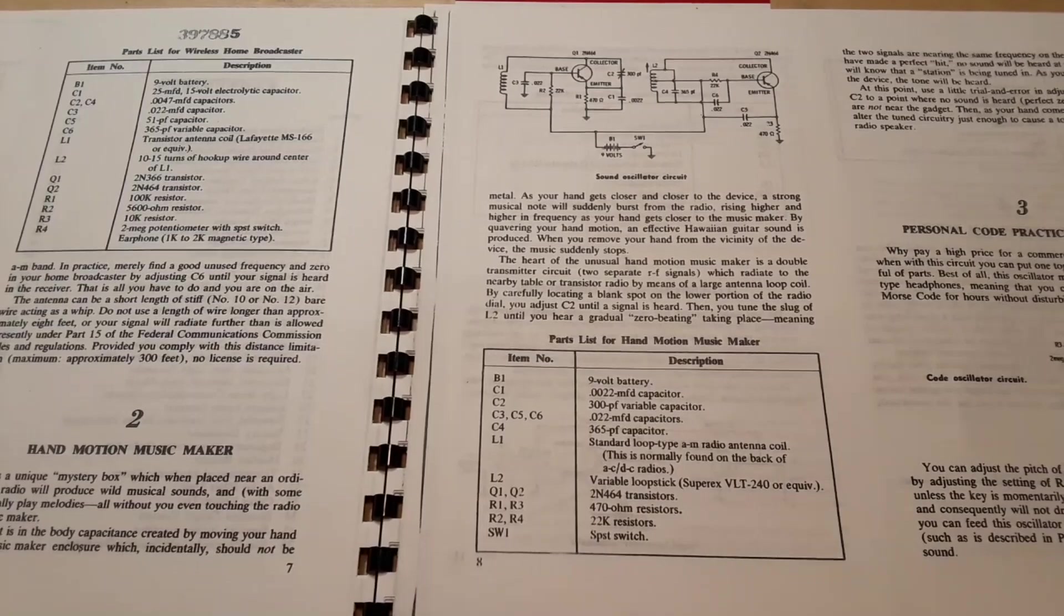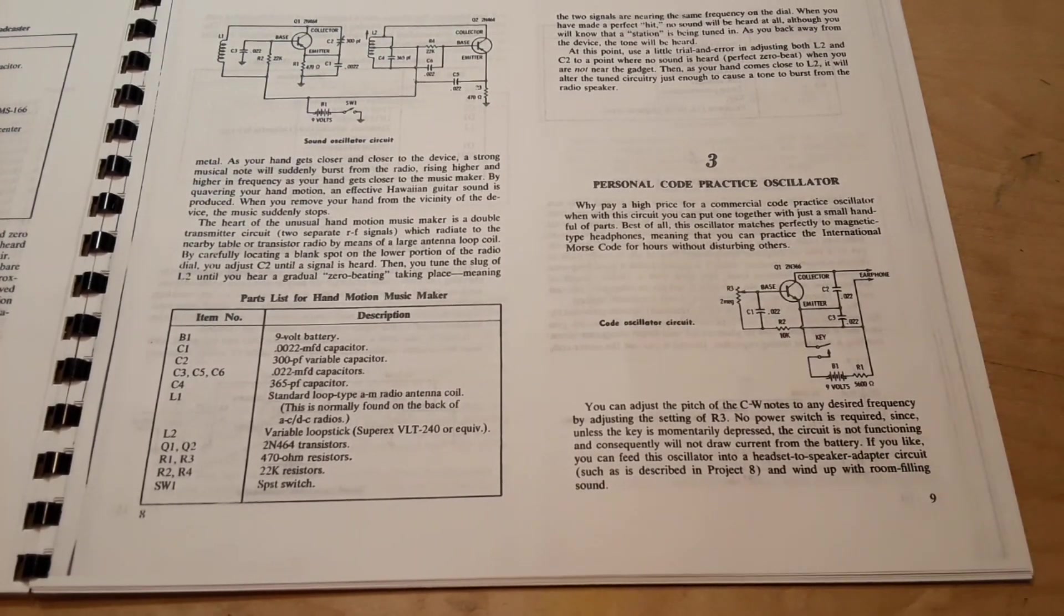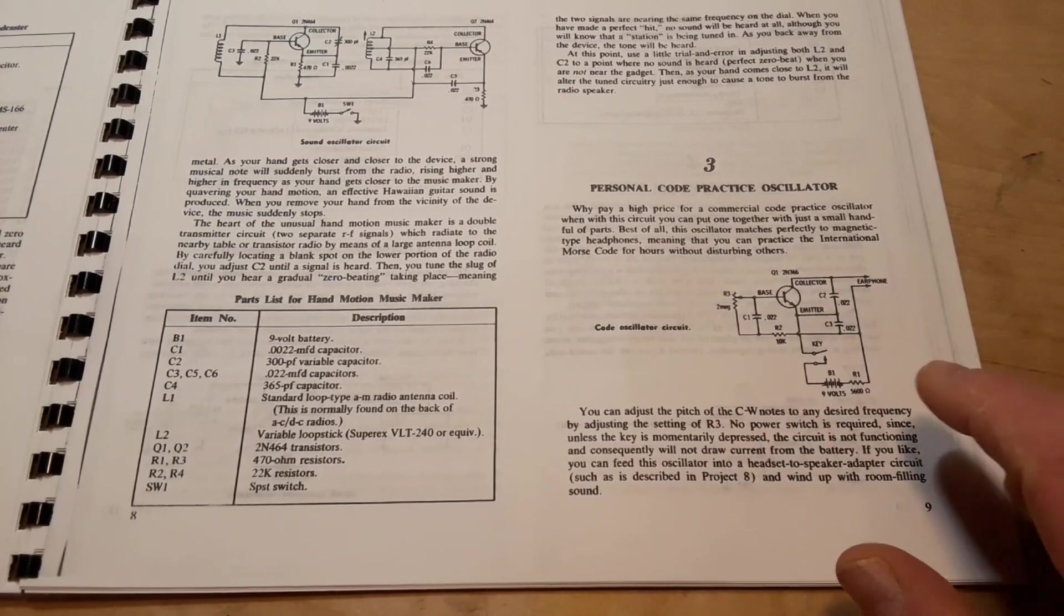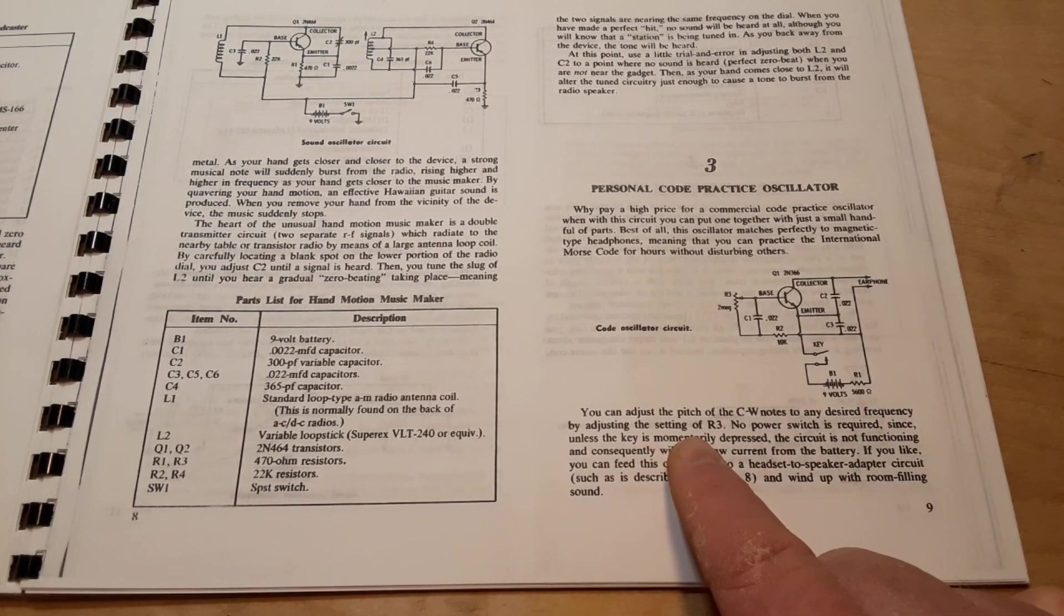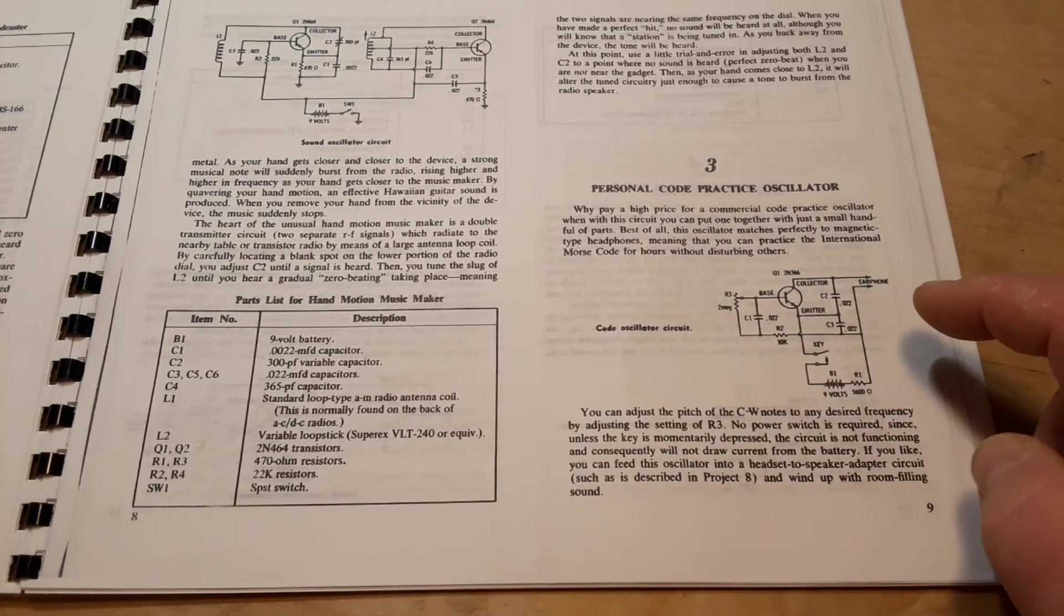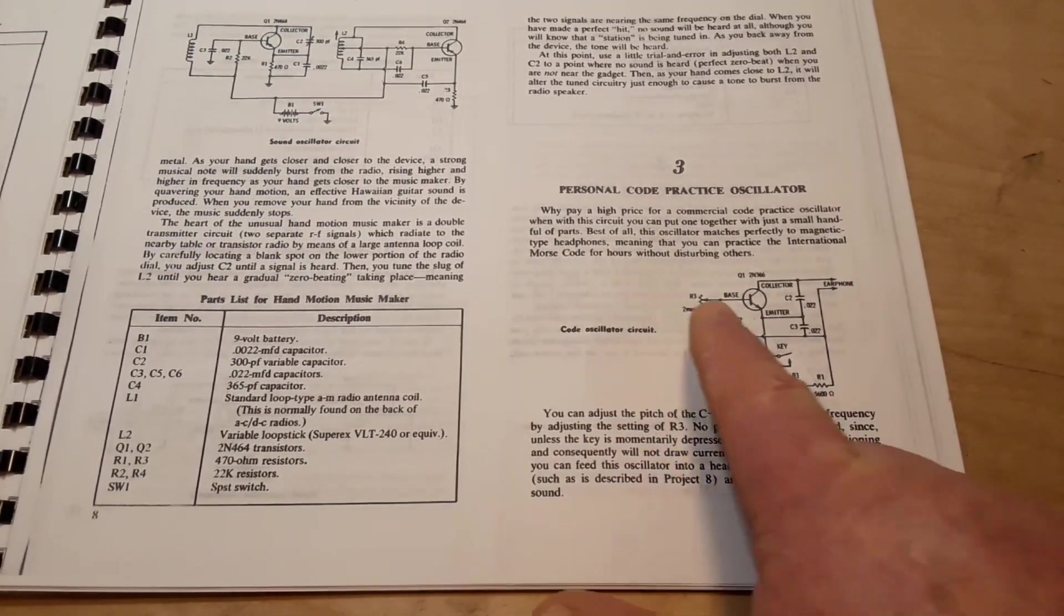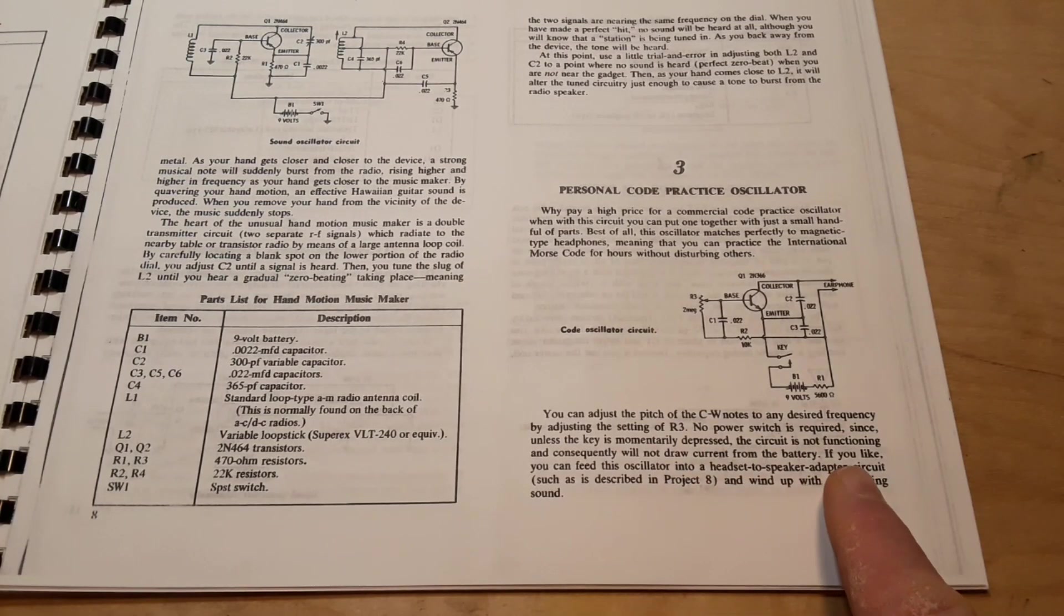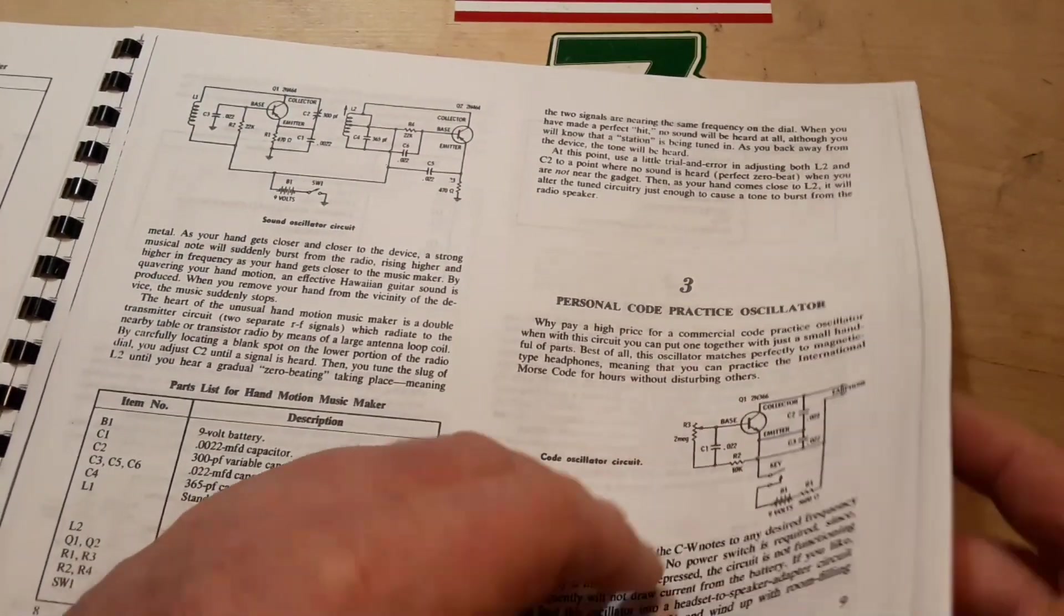Which radiate to the nearby table or transistor radio by means of a large antenna loop of coil. By carefully placing or locating a blank spot on the lower portion of the radio dial, you adjust capacitor number two. It's a variable capacitor. Back in these early days, the late 60s, early 70s, ham radio was a big thing. You needed to learn Morse code, or what they call CW, continuous wave, in order to get your license. So to do that, you would need a code practice oscillator, and here's one. You can adjust the pitch of the CW notes to any desired frequency by the setting of R3. I love this kind of stuff.